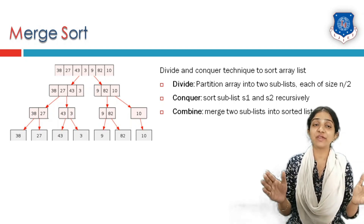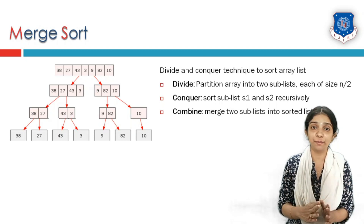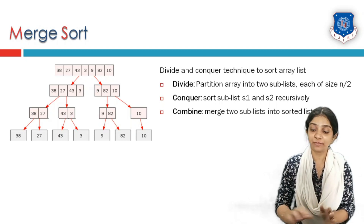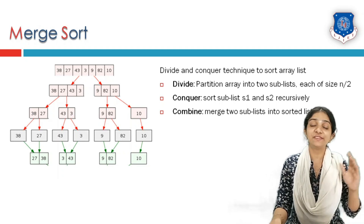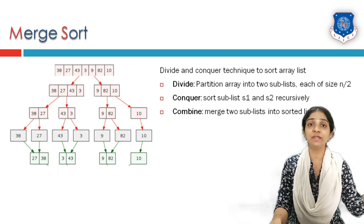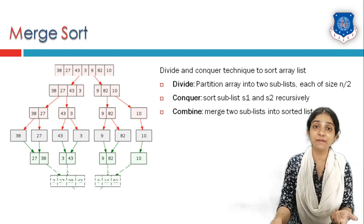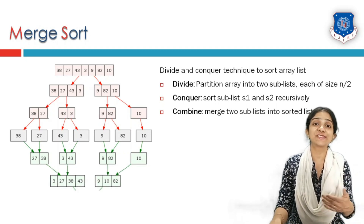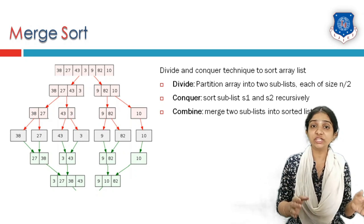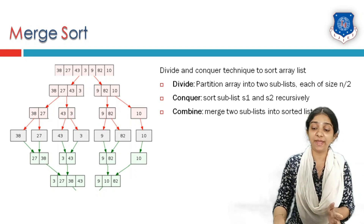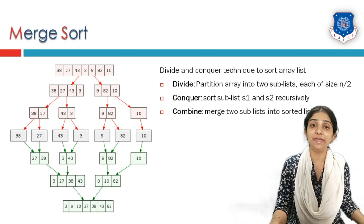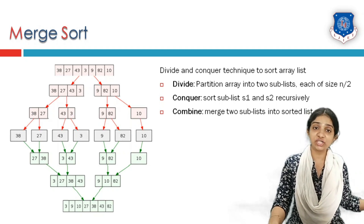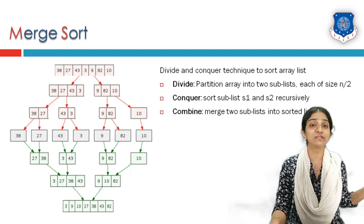In the combine stage, we try to combine two sublists in a sorted manner. Any two sublists are combined to make a larger sublist. Similarly, the next two sublists are combined to make another larger sublist. This process keeps repeating until the original two sublists are combined to make our original list of n elements, now in sorted order.